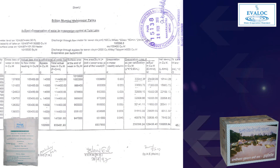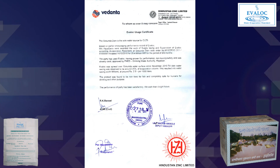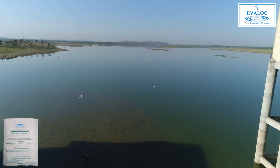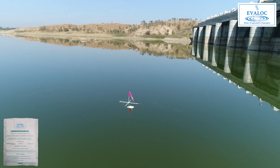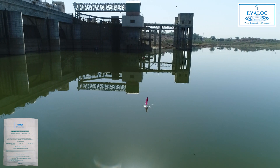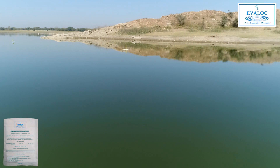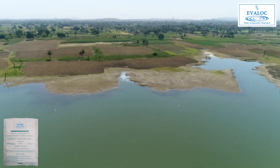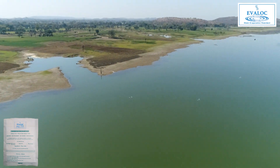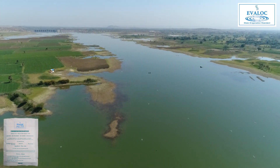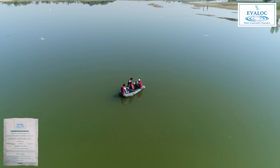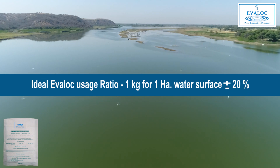EVALOC performance: Gosunda is a huge dam at Chittod made by the Government of Rajasthan and Hindustan Zinc Limited. Lakhs of people as well as cattle from Chittod and many villages use this water. Hindustan Zinc has been using EVALOC regularly since 2008 to combat water shortages. This is a film made in 2019 on the usage of EVALOC at Gosunda. At Gosunda, the average water surface is 400 hectares. To cover this area effectively, 800 SFMDAs — a special type of anchored float — are installed. EVALOC SR bags are attached to each SFMDA with the help of a motorboat.